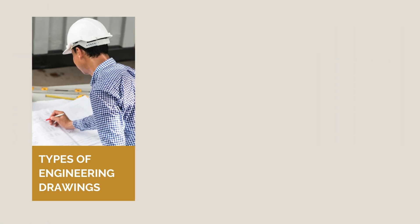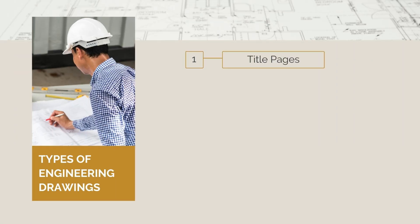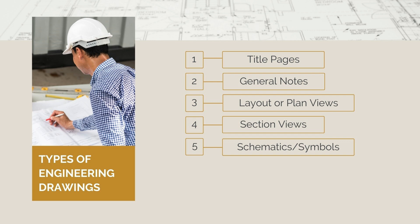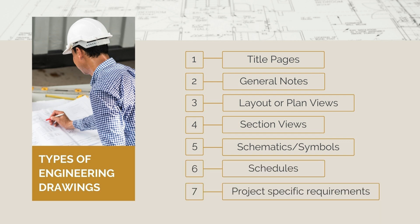There are lots of different types of drawings we'll be referring to on a construction project: title pages, general notes, layout and plan views, section views, schematics and symbols, schedules, and project-specific requirements. We need to be able to understand all of these different drawings and how they work together to paint a complete picture of a project and what we're going to be building.